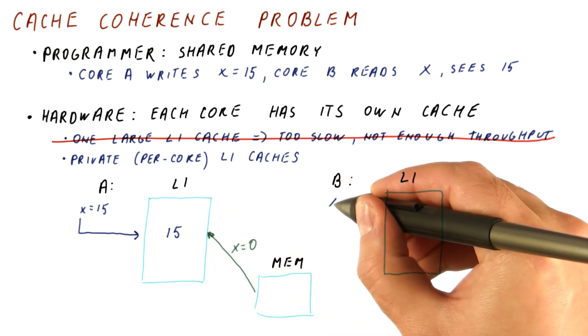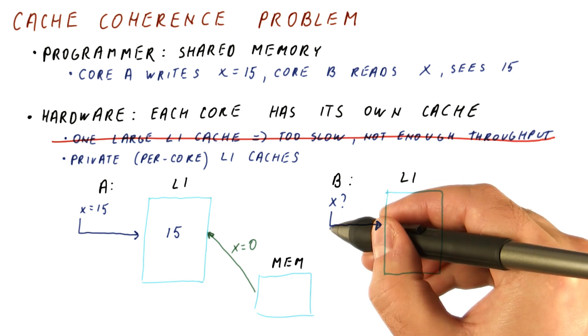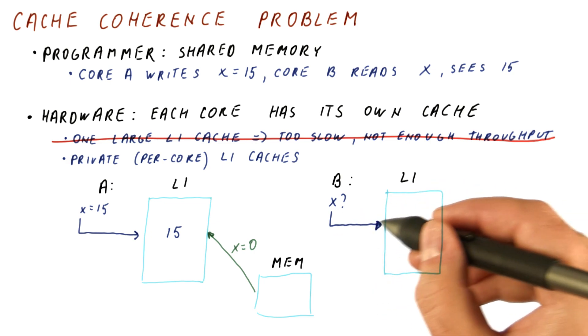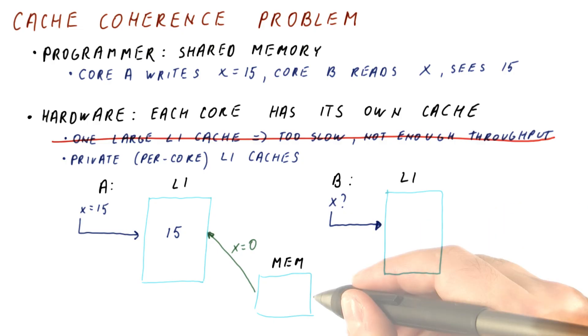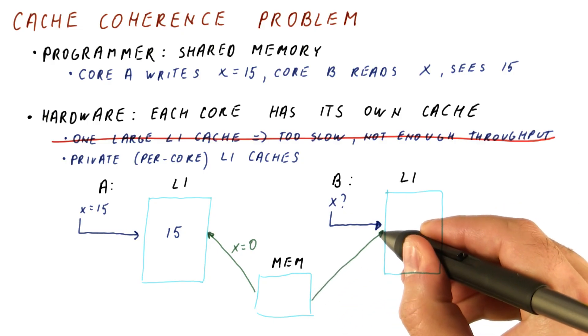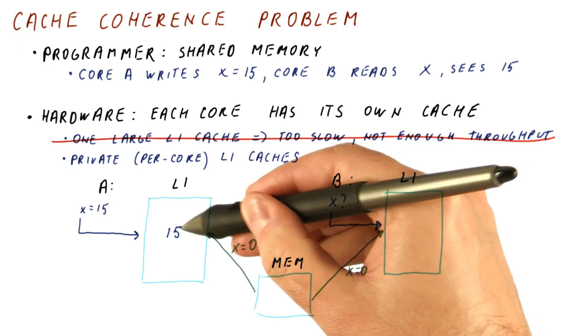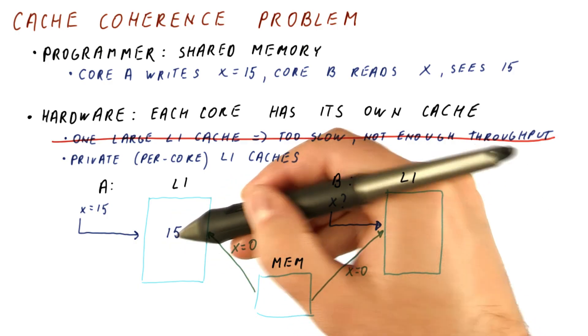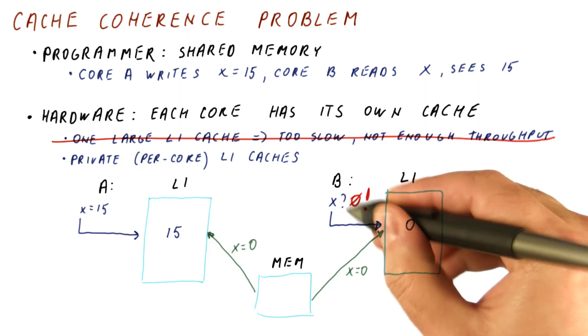Now let's say that core B wants to read x, so it wants to see what x is. It uses the address of x to index into its own cache, sees that it doesn't have what it's looking for there, and reads the block from main memory. This block here has 0 for x still because we didn't write back from A's cache yet. So we end up reading 0, which is not correct.